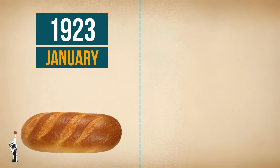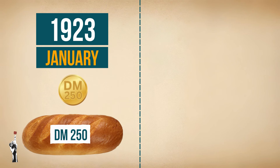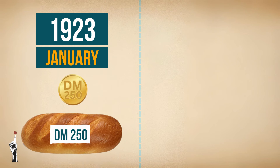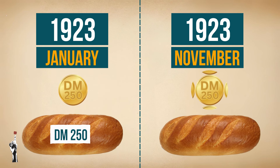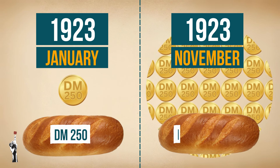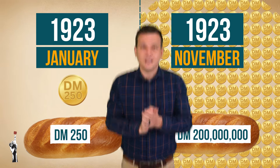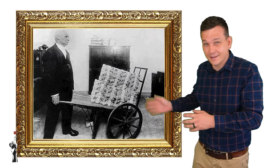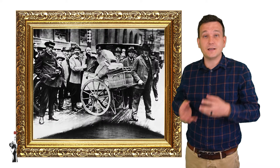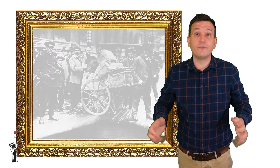That is what happened in Germany. In January 1923, a loaf of bread cost 250 German Mark, and in November of the same year a loaf of bread cost 200 million German Mark. That is hyperinflation at its worst — your money would literally not fit in your wallet; people literally walked around buying things with trolleys full of money.